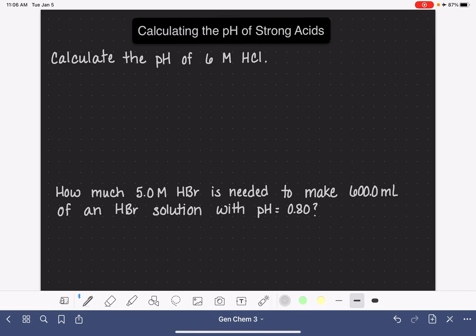We're going to do a couple of examples of pH calculations for solutions from strong acids. Let's start by calculating the pH of a 6 molar solution of HCl, which is one of our six strong acids. The pH is calculated by taking the negative log of the H3O+ concentration. In order to calculate the pH of 6 molar HCl, we need to figure out how much H3O+ is actually in that 6 molar HCl solution.